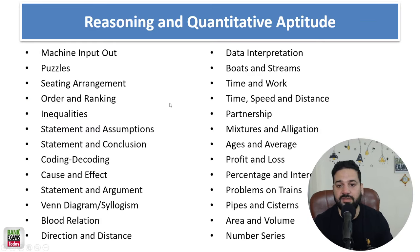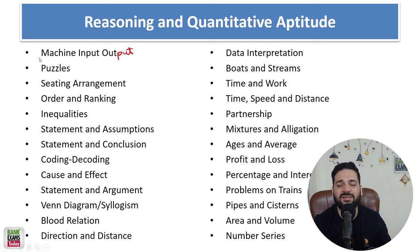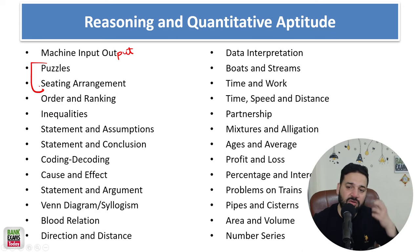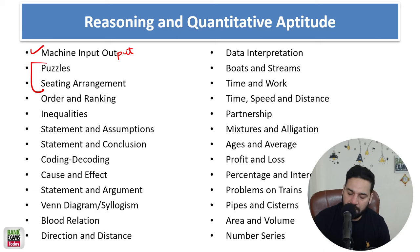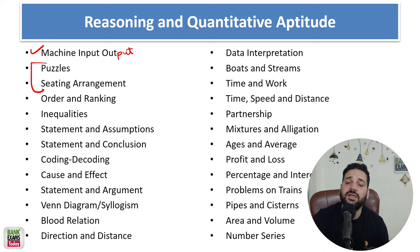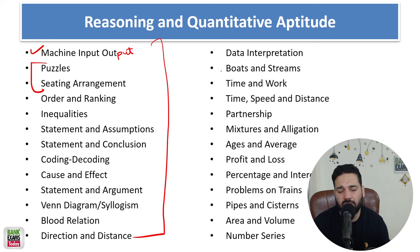In the Reasoning Ability section, there is Machine Input-Output, Puzzle and Seating Arrangement. As mentioned, puzzles and seating arrangement are very time-consuming given the 30-minute limit. Other topics include Syllogism, Inequality, Blood Relations, Direction Sense Test, Cause and Effect, and Coding-Decoding. These are the kinds of questions you can do easily, all within under one minute.